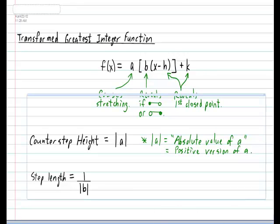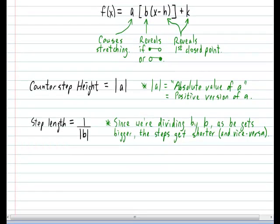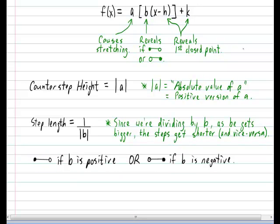Since we are dividing by b, logic would dictate the following: as b gets bigger, that means we end up dividing one by a bigger number, which causes the steps to actually get shorter. Now that's not all for b though. b actually has another very important effect on the graph. The steps will be closed on the left and open on the right if the value of b is positive, or the steps will be open on the left and closed on the right if b is negative.